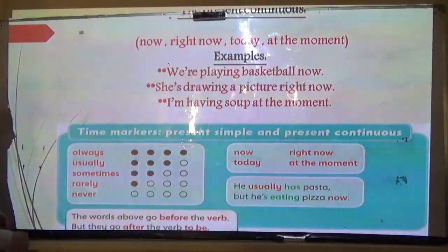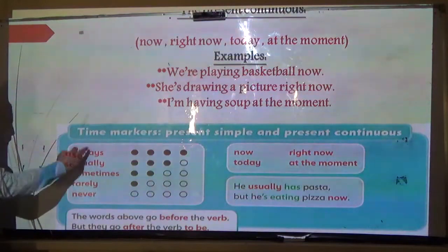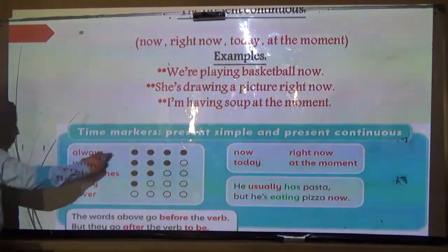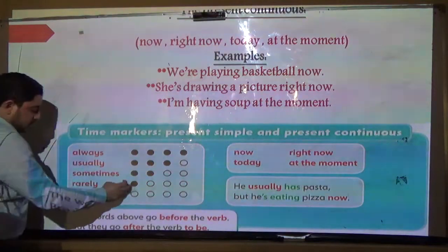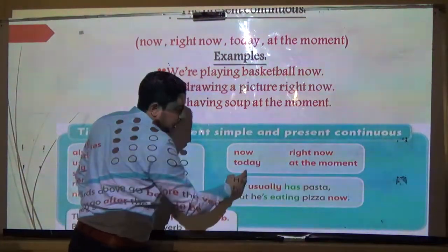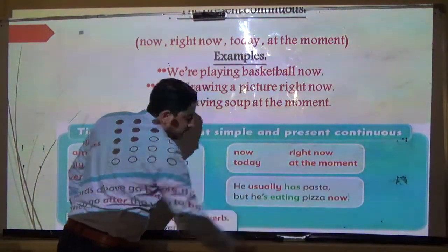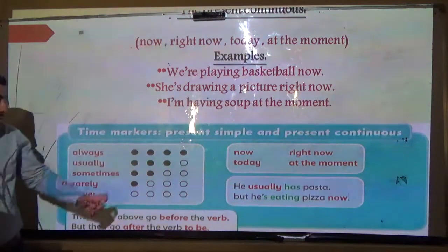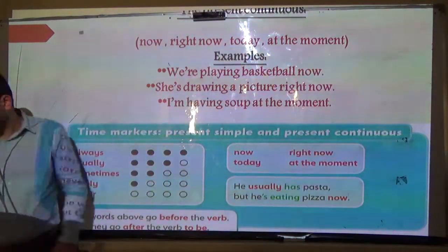Let's look at this in the student book. The time markers for the present simple are: always (all the time), usually (most of the time), sometimes (half the time), rarely (very few times), never (never happens). The present continuous time markers are: now, right now, today, at the moment. Example: 'He usually has pasta, but he is eating pizza now.' The adverbs of frequency go before the verb, but after the verb to be.